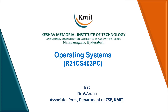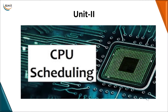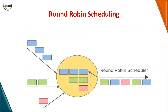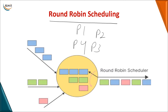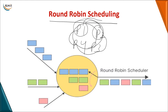Today in the operating system session we will be moving on to the next CPU scheduling algorithm called the Round Robin scheduling algorithm. As the name implies, if you have n number of processes P1, P2, P3, and P4, each process will be allotted the CPU for some amount of time in turn, and since the CPU is allotted in a circular fashion, we call it Round Robin.